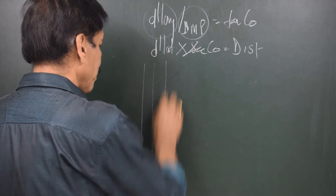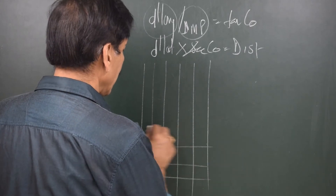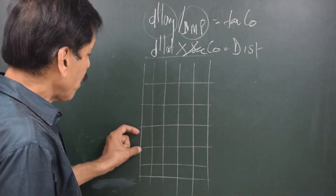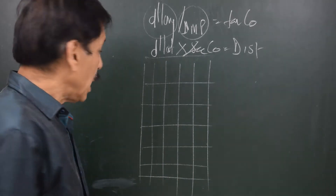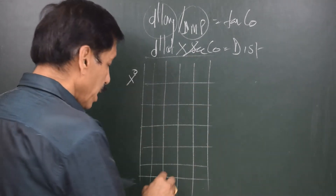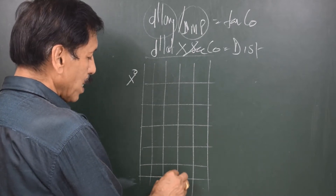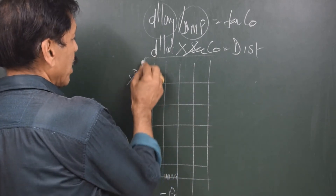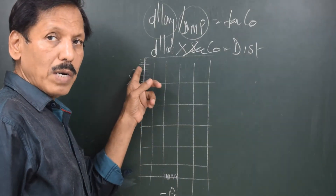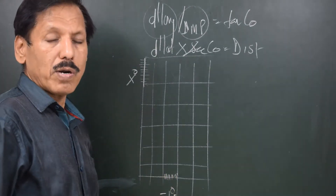If you look at the Mercator Chart, you will find that the D long are equally spaced, but the D lat are at increasing spacing as you go from the equator towards the pole. This gap keeps increasing but the D long gap is uniform. Suppose at a certain latitude x degrees, if you divide one degree of D long into 60 parts and also divide one degree of latitude into 60 parts, you will find that the spacing between one minute of latitude is more than the spacing of one minute of D long. This is called one meridional part on the Mercator Chart.